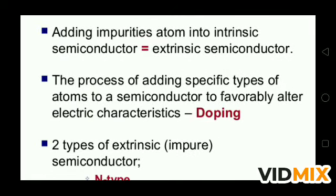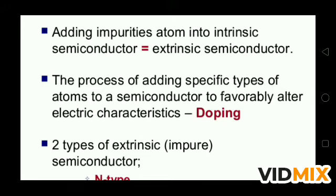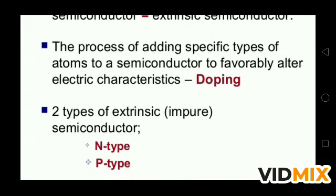Adding impurity to the intrinsic semiconductor makes it an extrinsic semiconductor. Extrinsic means impure semiconductor and intrinsic means pure semiconductor. The process of adding a specific type of atom to a semiconductor to favorably alter its electrical characteristics is called doping. There are two types of extrinsic semiconductors: N-type and P-type.